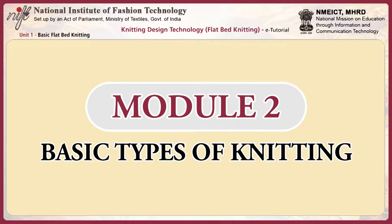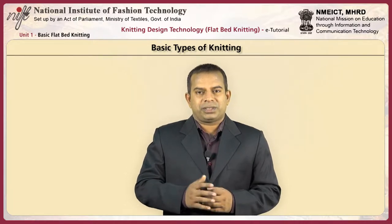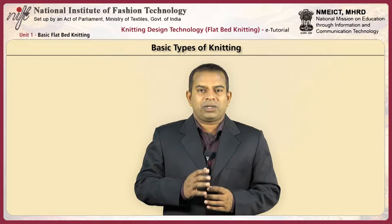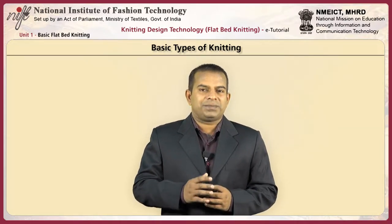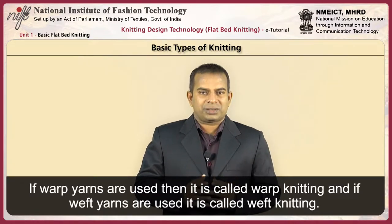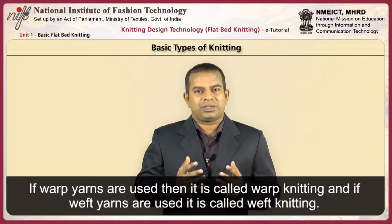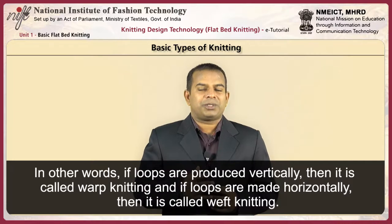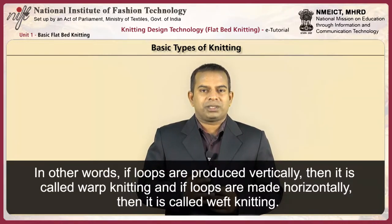Now let us move on to learn about the basic types of knitting. Either warp yarn or weft yarn can be used for knitting. If warp yarns are used, it is called warp knitting; if weft yarns are used, it is called weft knitting. In other words, if loops are produced vertically, it is called warp knitting, and if loops are made horizontally, it is called weft knitting.